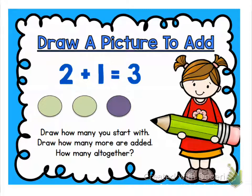Now let's look at this next one. We could draw a picture to add. So for 2 plus 1 equals 3, we could have drew 2, and then 1 more, and then we could count them all together to figure out it is 3. So draw how many you start with, then draw how many more are added, and then see how many are altogether.